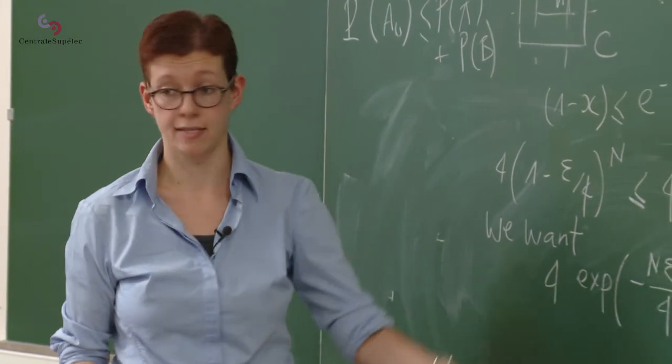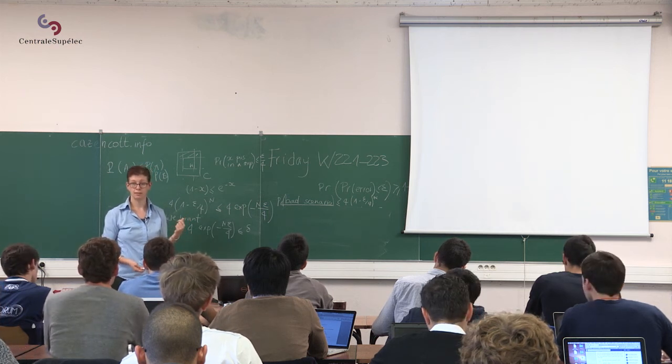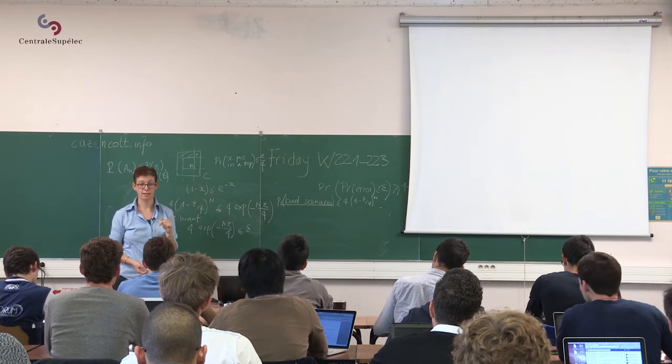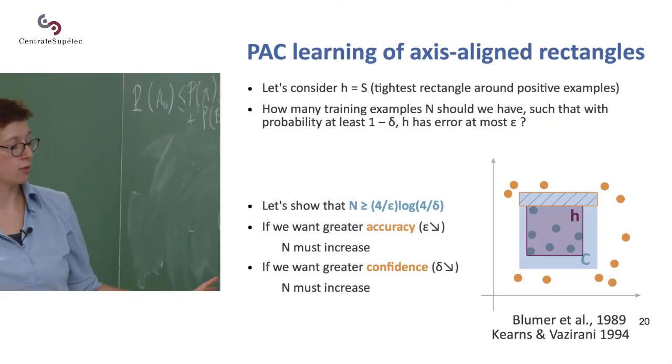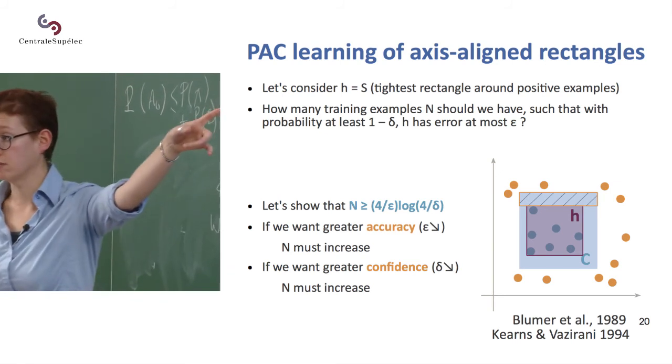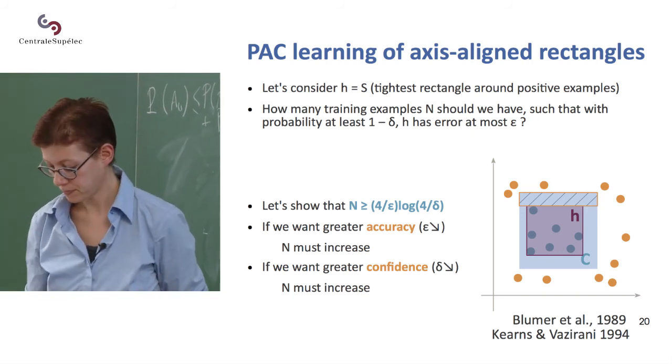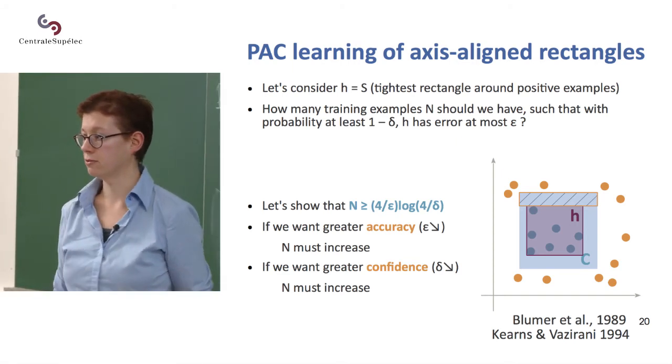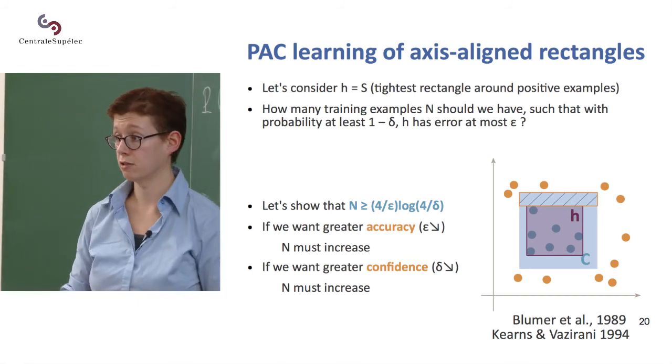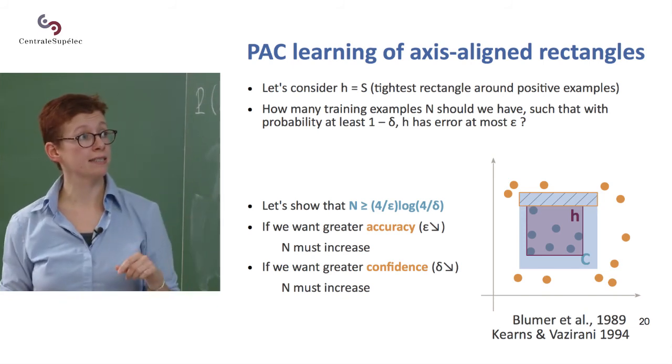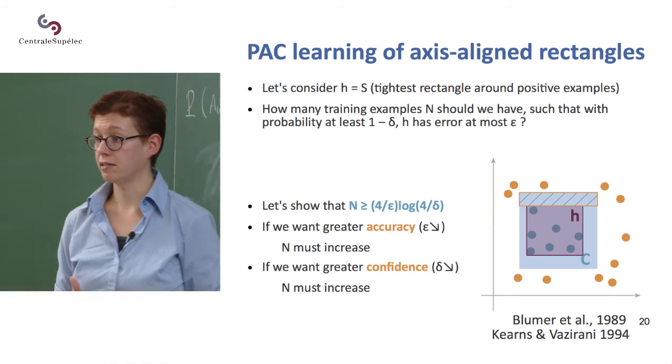So we want that 4 exponential minus n epsilon over 4 is bounded by delta. So we do some math, which consists in dividing by 4, taking the log and shuffling things around. And in the end, we arrive to something that regards n. Because remember, the whole question is, what can we say about n that guarantees us that given epsilon and delta, we are probably approximately correct. So if I haven't made any mistake, it looks fine. This is equivalent to the equation in blue here, which tells you that n must be greater than 4 over epsilon log of 4 over delta.